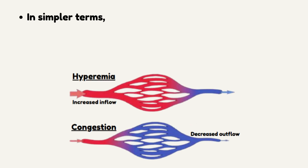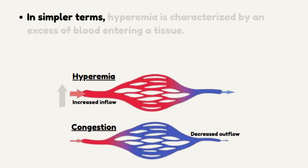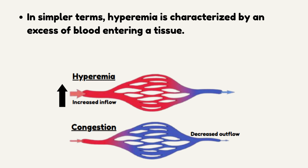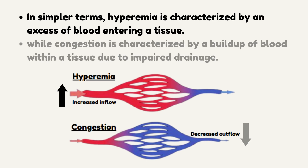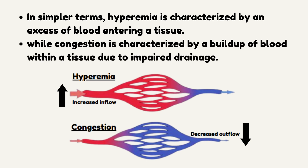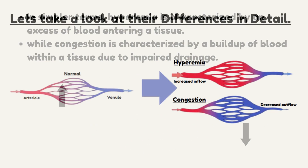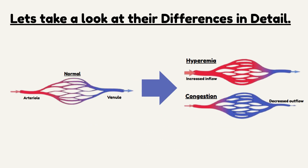In simpler terms, hyperemia is characterized by an excess of blood entering a tissue, while congestion is characterized by a buildup of blood within a tissue due to impaired drainage. Let's take a look at their differences in detail.